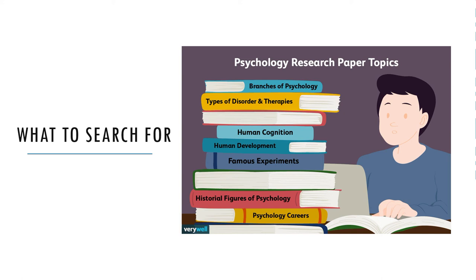How many sources are enough for your literature review? This is a difficult question because it depends on how extensively your topic has been studied and your own goals. One study found that across a variety of professional journals in psychology, the average number of sources cited per article was about 50, giving a rough idea of what professional researchers consider adequate. As a student, you'll probably be assigned a much lower minimum number, but the principles for selecting the most useful sources remain the same.